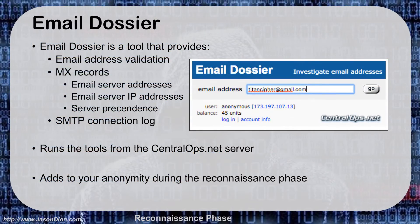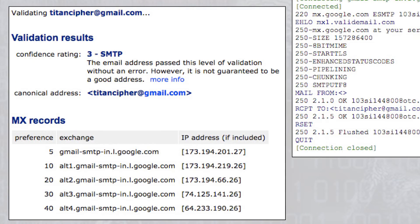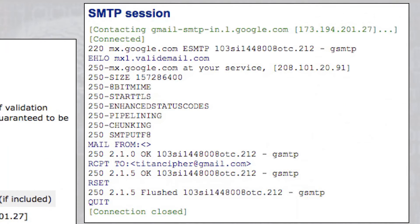There's also a function called the Email Dossier on Central Ops. It provides mail records, email address validation, IP and server addresses for those emails, and an SMTP connection log. For example, entering titancypher at gmail.com, clicking go, we see a confidence rating of 3 — meaning the email passed validation and is a real address. We can see the MX records, and on the right, the SMTP session where Central Ops' server actually talked to Google's server to validate the email address.